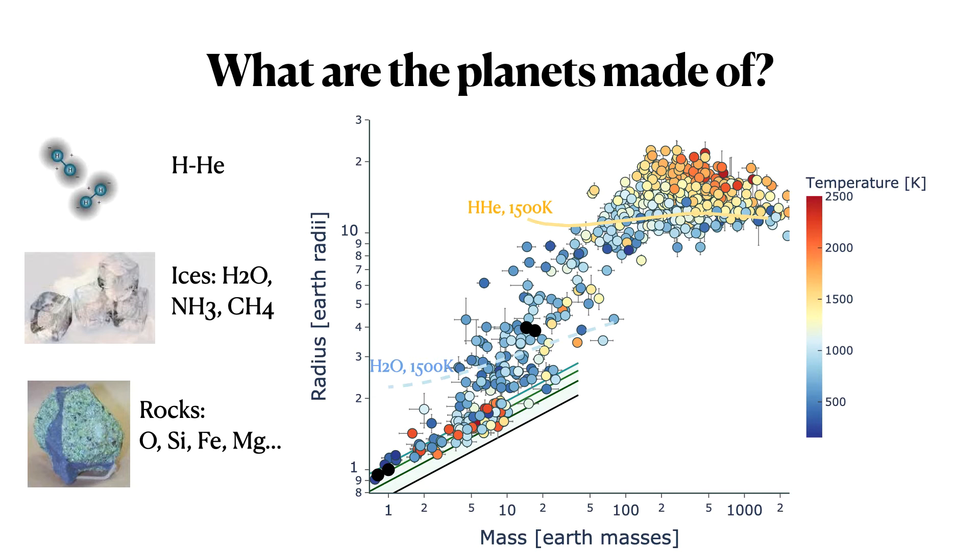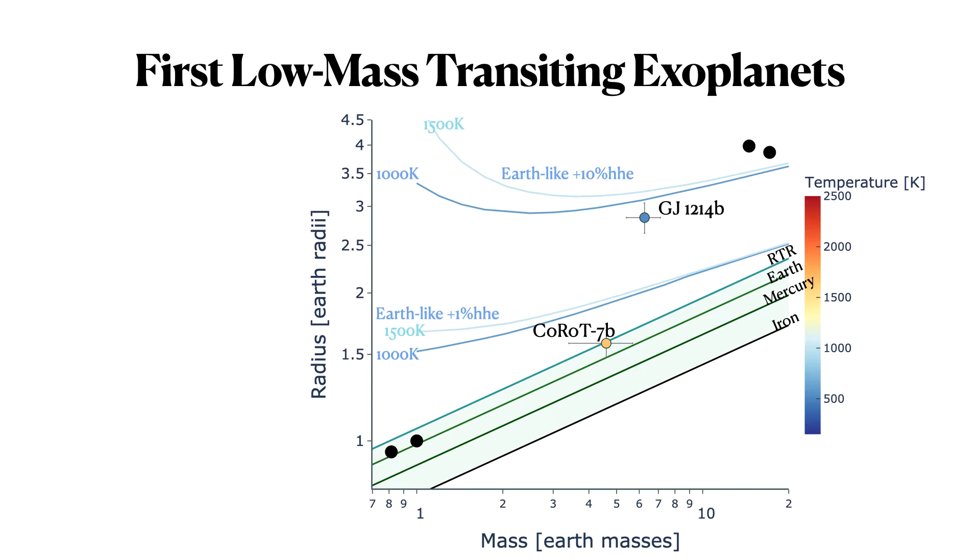I want to argue that our best bet to constrain composition in exoplanets and therefore formation is to focus on these small planets over here. And it has taken a really long time to build this data set and be large enough for us to do population studies. And I want to tell you first, I want to show you the first two planets in this regime that had a mass and radius measurements. This was Corot 7b and GJ 1214b, which was discovered in 2009. And you can see already that they are very different planets, even though they have not very different masses.